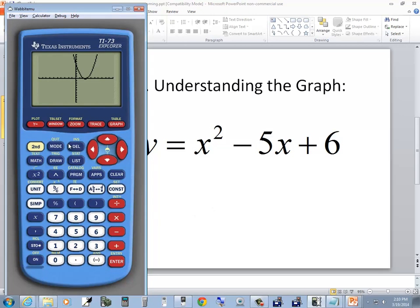If I press zoom, the first one says Z box. If I press enter on it, if I do an up arrow and left arrow, you'll see my cursor. We're going to put this in the upper left-hand corner of the box we want to draw. That's good right there. Press enter.